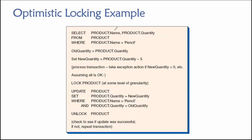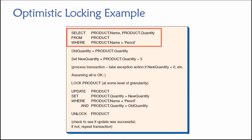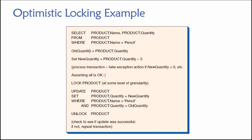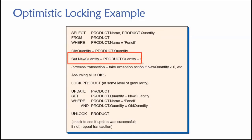Now let's look at some pseudo-code with SQL comparing optimistic versus pessimistic locking. In optimistic locking, we are optimistic that a conflict will not occur — it's unlikely we'll have a conflict. So in that case, we do not begin by locking resources; we just start by reading. Here we're fetching some data — in this case the quantity of a product we have available — and storing it in a variable in our transaction.